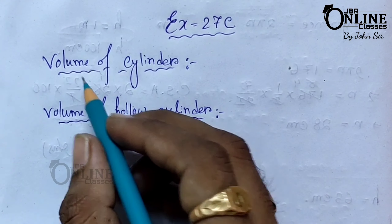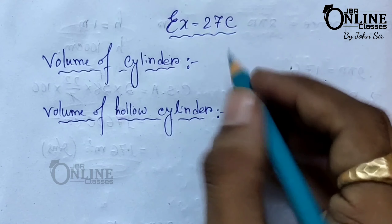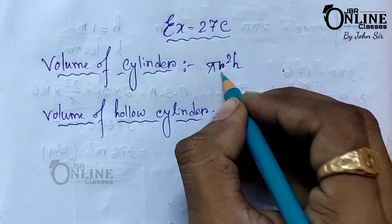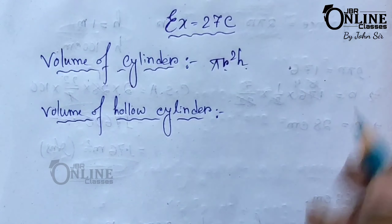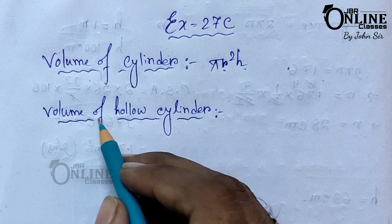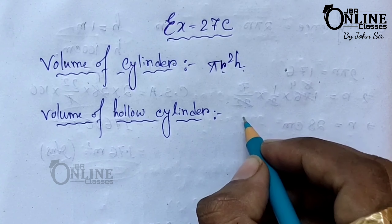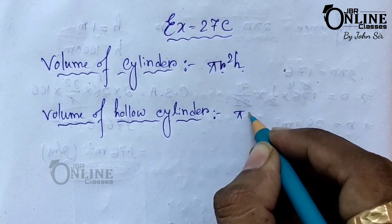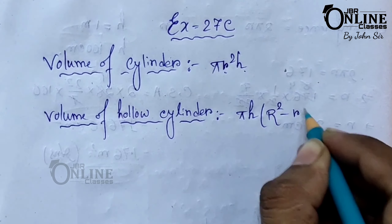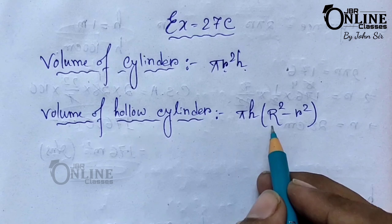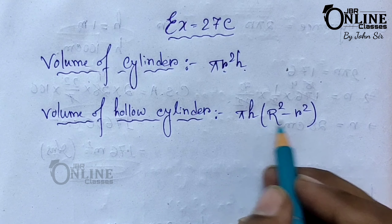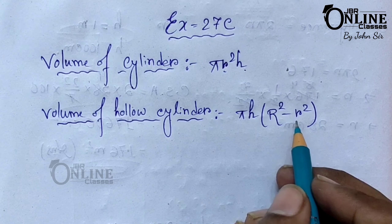The formula for volume of a cylinder is pi r squared h, where r is the radius and h is the height. For the volume of a hollow cylinder, the formula is pi h into (capital R squared minus small r squared), where capital R is the external radius and small r is the internal radius.